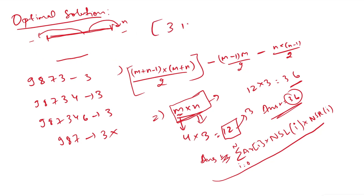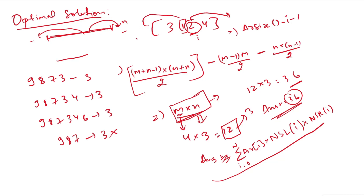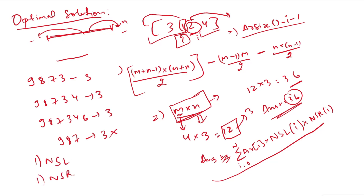For boundary conditions: for array [3,1,2,4], if element 2 has no next smaller element on the right, we set the right distance as array_size − i − 1. If element 1 has no next smaller element on the left, we set the left distance as i+1. In the code, we find the length, create left[] and right[] arrays using a stack to compute next smaller element on the left and right respectively. Then we compute the result as the summation of array[i] × left[i] × right[i], taking modulo since the answer can exceed 10^9+7.